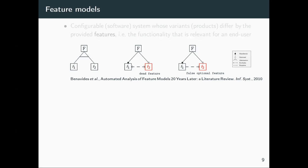Software product lines have a reference architecture and a variability model. Here's a simple feature model with a root feature F and two child features F1 and F2. The notation on the left shows alternative features, meaning F1 and F2 are alternative. We also have a cross-tree constraint — in this case an excludes relation, meaning F1 and F2 exclude each other.